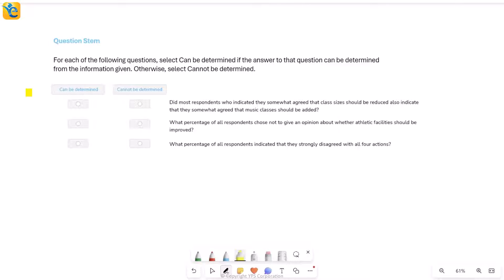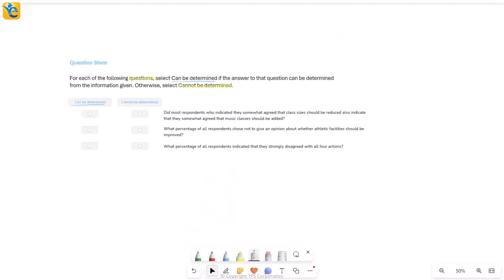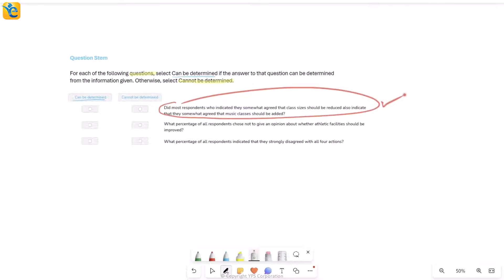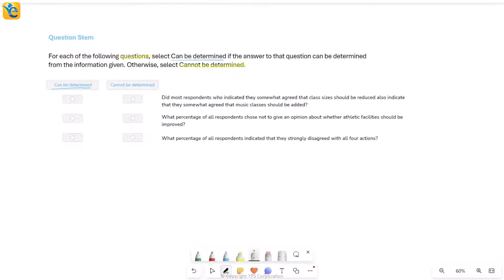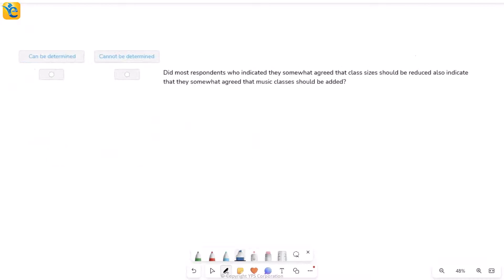Let's get back to the question. It says for each of the following questions, select 'can be determined' if the answer can be determined from the information. Otherwise, select 'cannot be determined'. Basically, all the information we have here - if using that information we can get an answer to this question. We don't care about what the answer is, but whether I can answer the question. If I can, I'll mark can be determined. If I cannot, I'll mark cannot be determined.